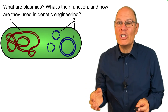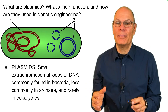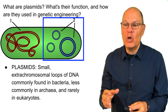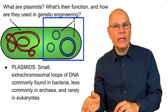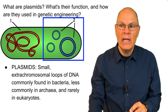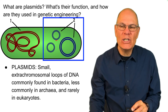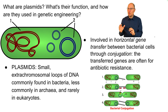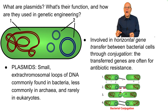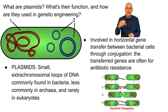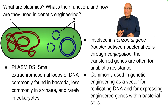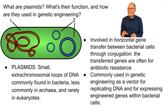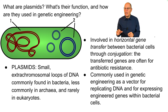What are plasmids, what's their function, and how are they used in genetic engineering? Plasmids are small extra-chromosomal loops of DNA commonly found in bacteria, less commonly in archaea, and rarely in eukaryotes. They are involved in horizontal gene transfer between bacterial cells through a process called conjugation, often transferring genes for antibiotic resistance from one cell to another. Plasmids are also commonly used in genetic engineering as a vector for replicating DNA and for expressing engineered genes within bacterial cells.